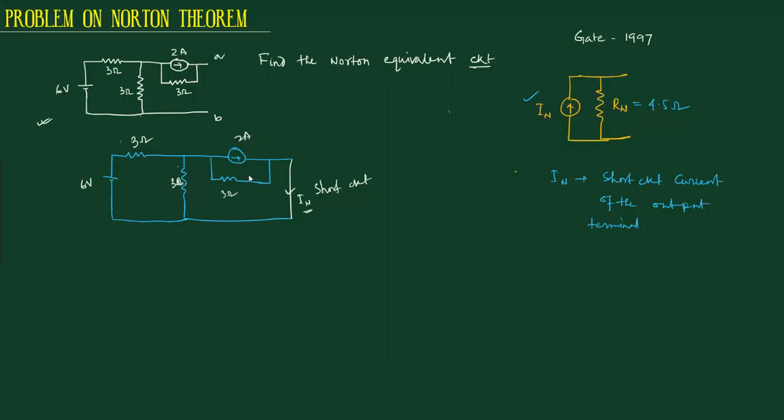The current passing through the short circuit will be In. For simplicity, I'll replace the 2 ohm and 2 ampere current source in parallel by its Thevenin equivalent. A current source in parallel with resistance is equivalent to a voltage source in series with resistance. So 2 ampere with 3 ohm becomes 6 volt in series with 3 ohm.